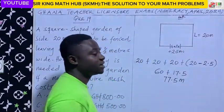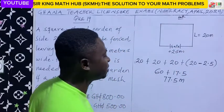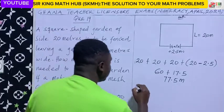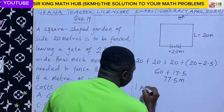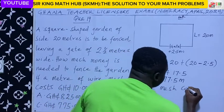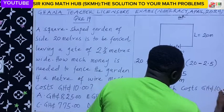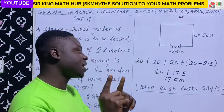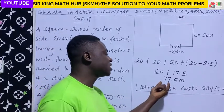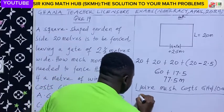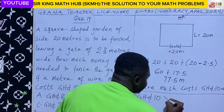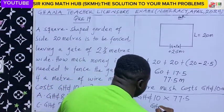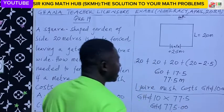So 77.5 meters is the total length of wire mesh needed to fence around this square-shaped garden. Since 1 meter of wire mesh costs 10 Ghana cedis, the cost of 77.5 meters would be 10 × 77.5 = 775 Ghana cedis.